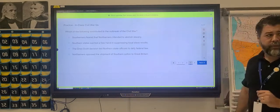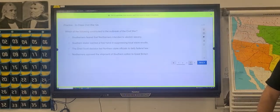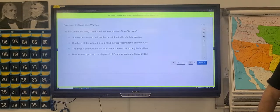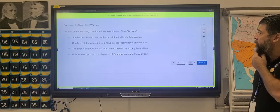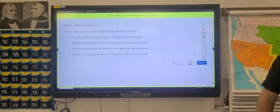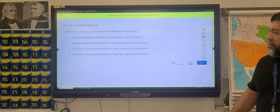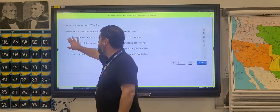How about this one? Does anybody think this is an easy question? Yes sir. So the following contributed to the outbreak of the Civil War. Southerners feared northerners intended to abolish it. Is this easy to you? Pretty much. Okay. So we'll say it's one of the easy ones. Sure.